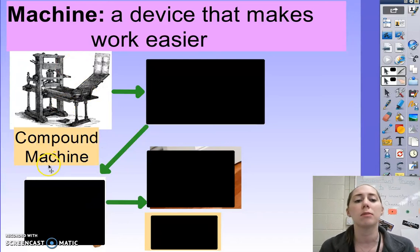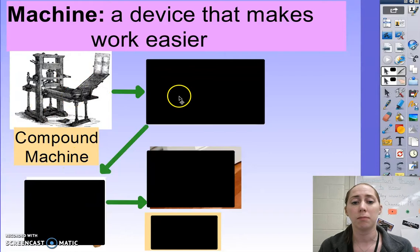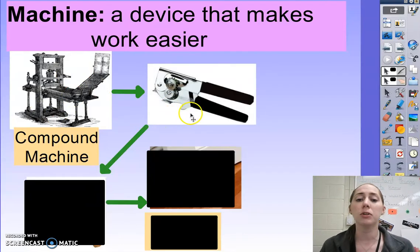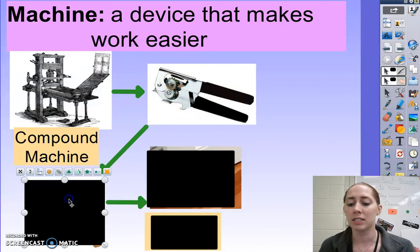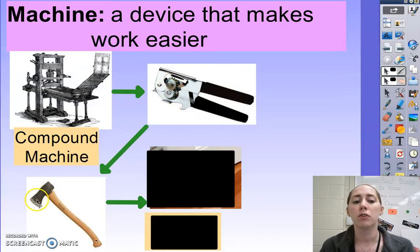These are what's known as a compound machine, because there's multiple machines making up this bigger machine. You can have slightly simpler compound machines, like a can opener. You've got a lever, wheel and axles, you've got wedges. You can have an even simpler compound machine. You've got your wedge here, and a lever, and an axe.